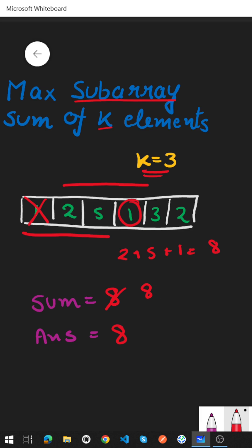Now we will again move our window one step ahead. So we will remove this element 2 and we will include this element 3. So our new window would look something like this: 5, 1 and 3.